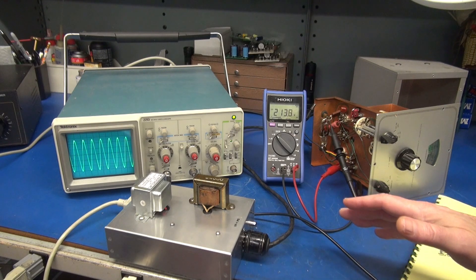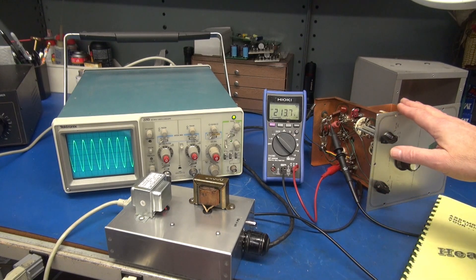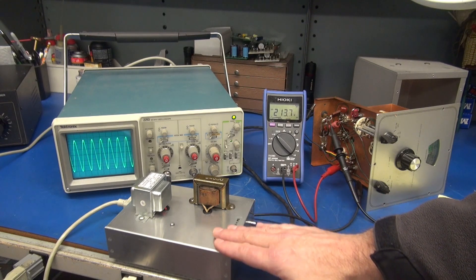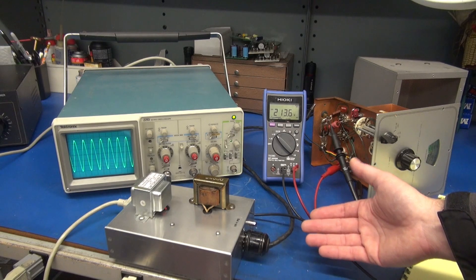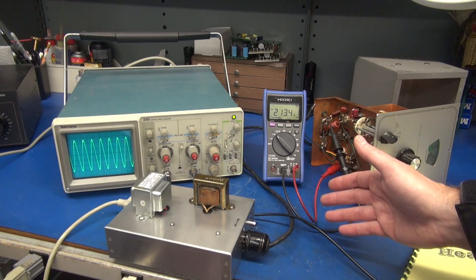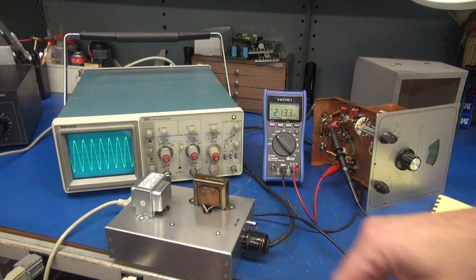This will allow you to run your VFO on any transmitter that you wish because all the power supply requirements are taken care of here. All you have to deal with is your key line and your output that goes to your transmitter. Let me show you how this little guy's built.